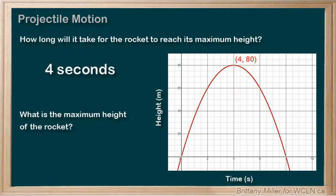To find out how high that maximum height actually is, that will be the y-value, or in this case, the h-value of that vertex. Remember that the y-axis here is height in meters. So, the maximum height of the rocket is 80 meters.